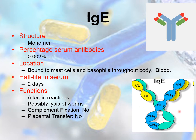IgE antibodies have an epsilon heavy chain and also occur in the form of a monomer. The monomer of IgE is composed of four constant regions of the heavy chain, which is why they do not have a hinge region. They contribute about 0.002 percent of total serum antibodies and are generally present bound to mast cells and basophils throughout the body, though they may also be present in blood in a free form.